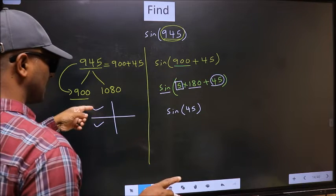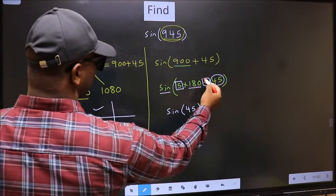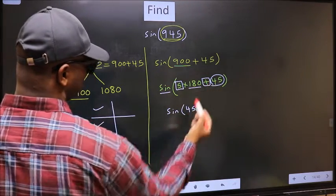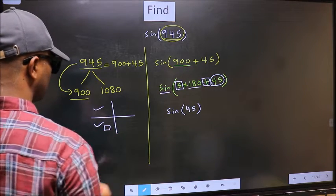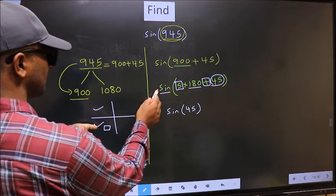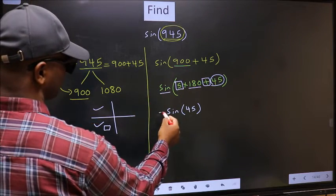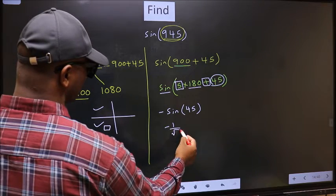So now to select the quadrant, we should look at this symbol. Here we have plus. That means the angle lies in the third quadrant. And in the third quadrant, sin is negative. So we should put negative. So -sin(45) = -1/√2.